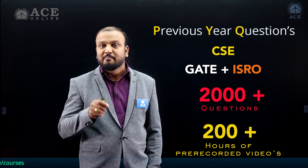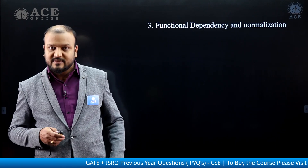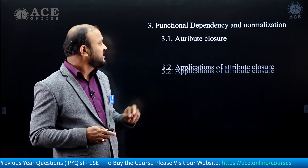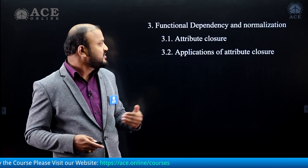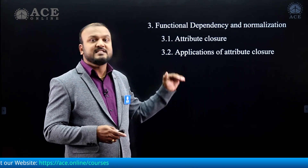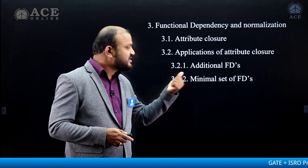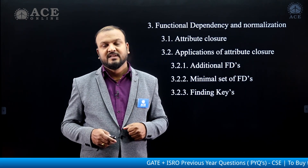As we arranged all the questions of GATE and ISRO subject-wise and topic-wise, preparation becomes very easy. For example, in Chapter 3 on functional dependency and normalization in DBMS, we have questions related to attribute closure, and further classified by applications — including additional functional dependencies, minimal set of functional dependencies, and finding the keys of a relation.